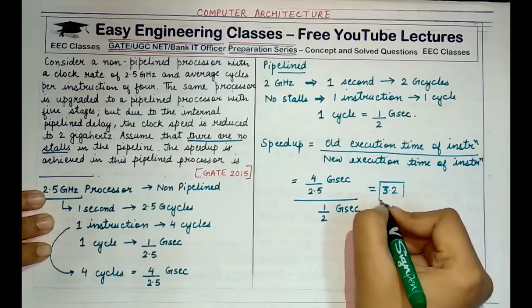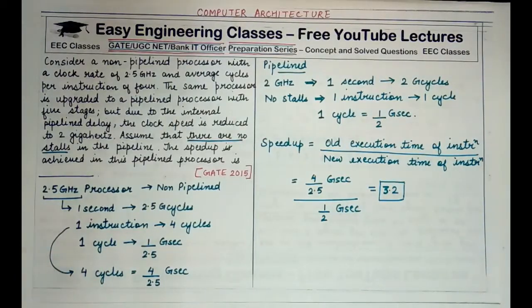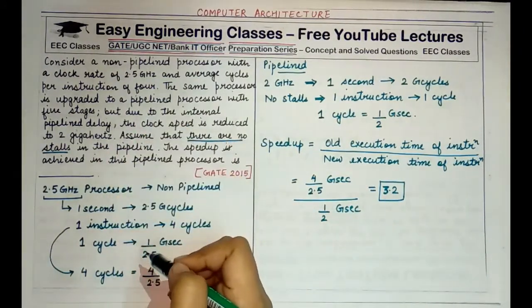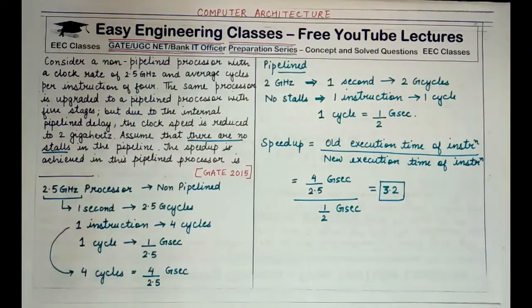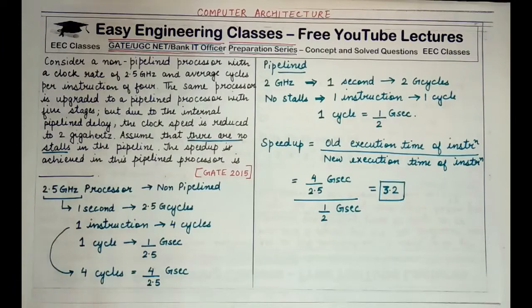This is the speedup value that is attained when you calculate the correct answer from here and you find out the procedure in which this question is performed. So basically by 3.2 times the new pipeline would be, there is a difference of 3.2 times between the old non-pipeline processor and the new pipeline processor.